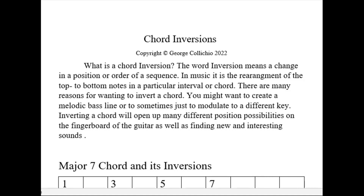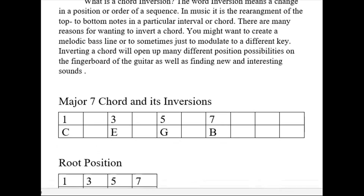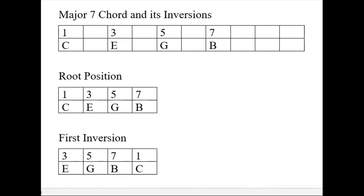So let's first review: what is a chord? We're going to start with the major seventh chord. To build a major seventh chord, we need to take the first, the third, the fifth, and the seventh note of a major scale — in this case, a C major scale. So in C major, the first note is C, the third note is E, the fifth note is G, and the seventh note is B.